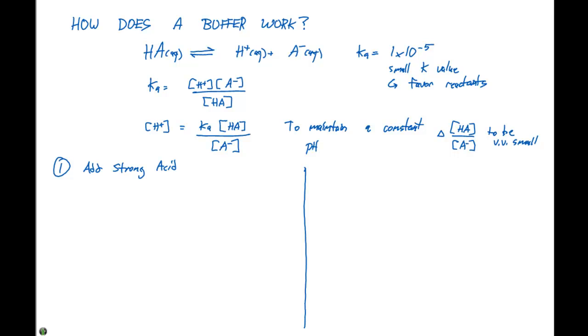So any H plus ions added to the solution will interact with the A minus ions and shift this equilibrium back to the left. So if we increase our particular H plus, equilibrium can shift over to the left. So if we have H plus plus A minus, what's gonna happen is that's gonna shift forward to form HA ions.